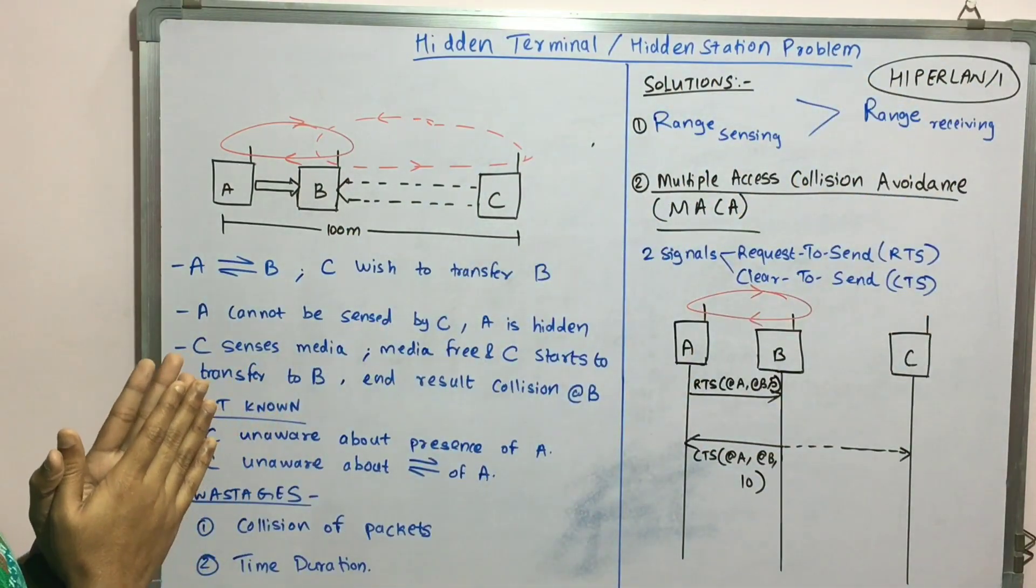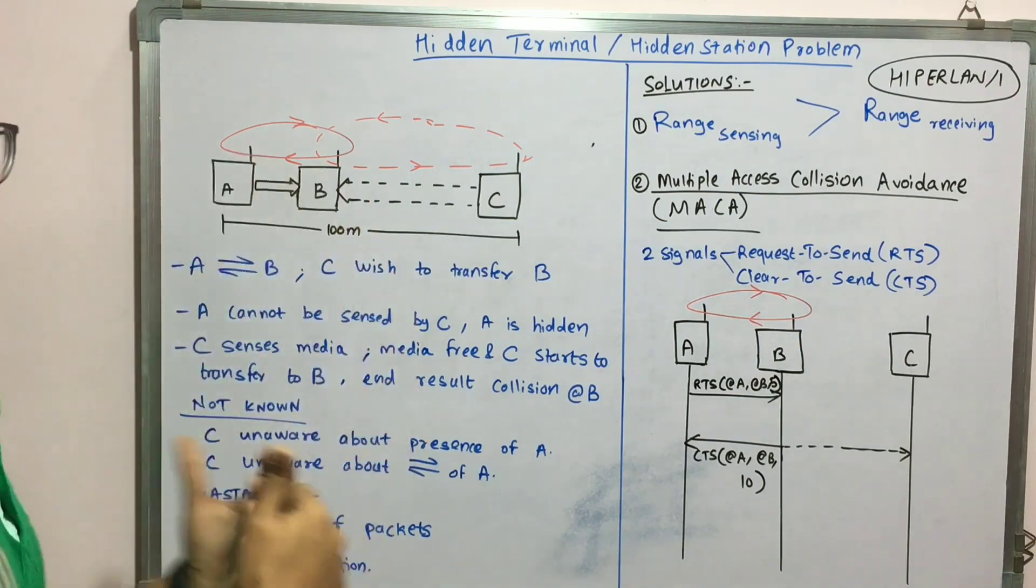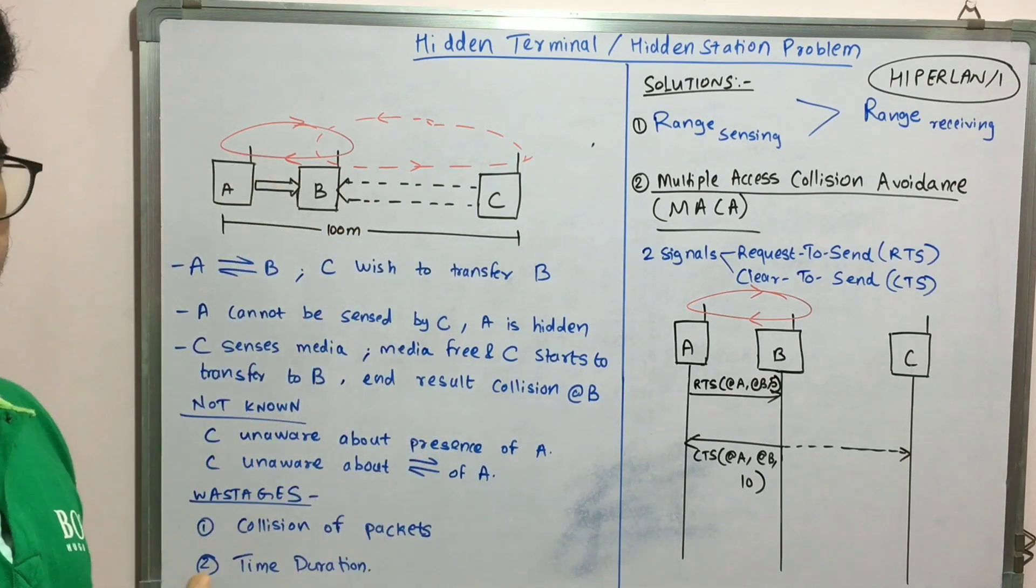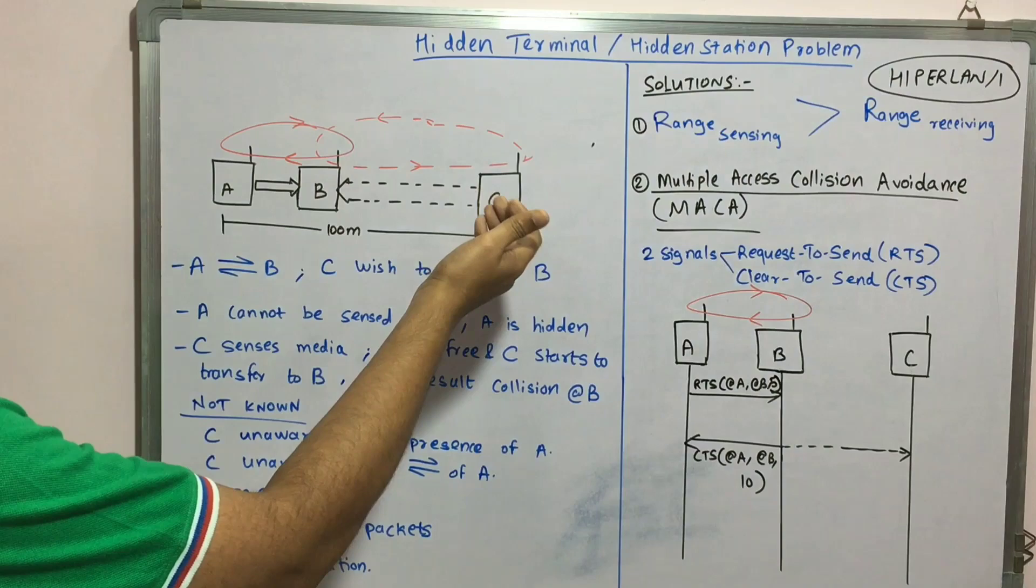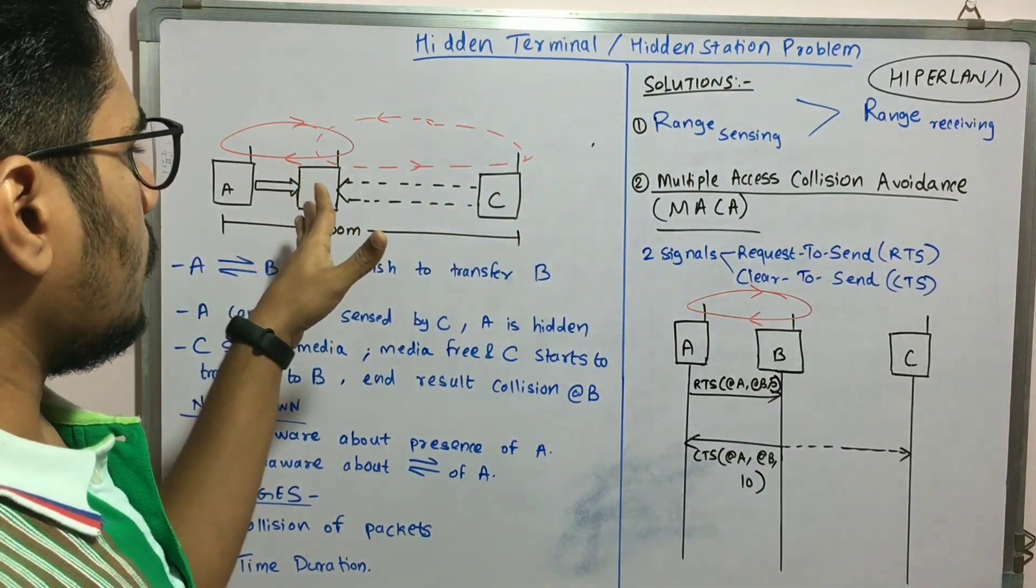C doesn't know the presence of A. So A is calling or transferring or communicating to B at some data rate. Now C, before it starts communicating or before it wants to do the data transfer, it will sense the medium.